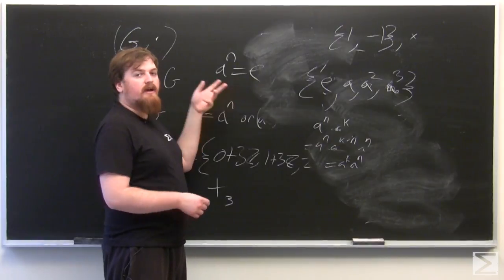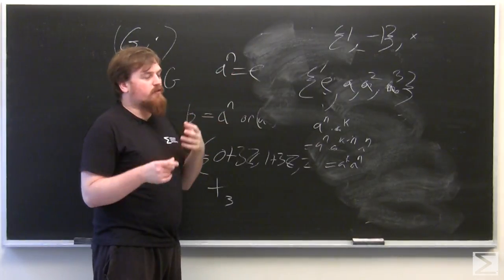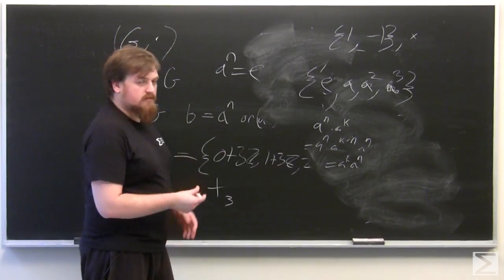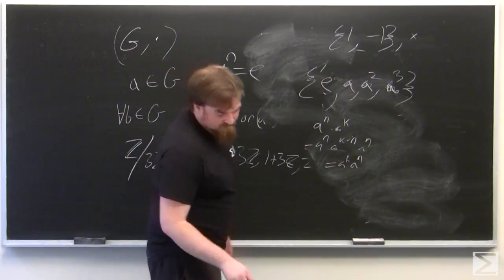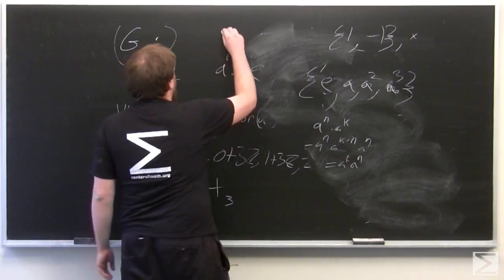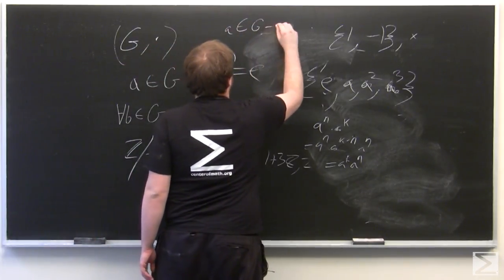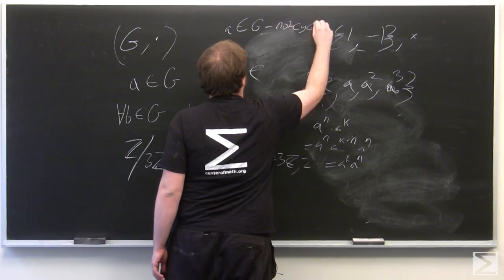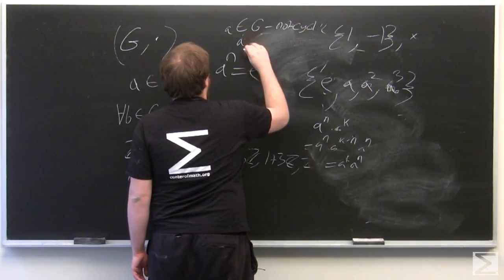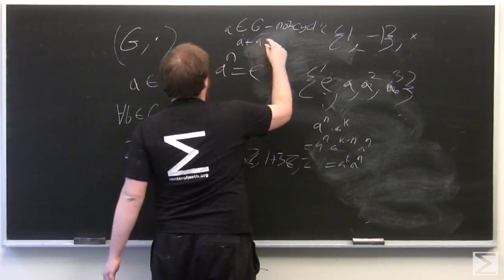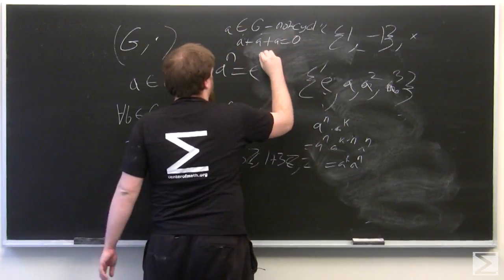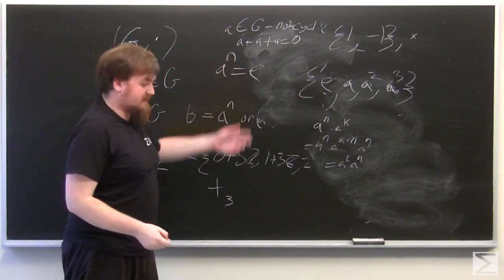So what we say here is that the element A has order n. And calling this the order of the element A is valid even for groups which aren't cyclic groups. For example, in just any group G, say G has an addition rather than a multiplication as its operation, A has order 3 in this case.